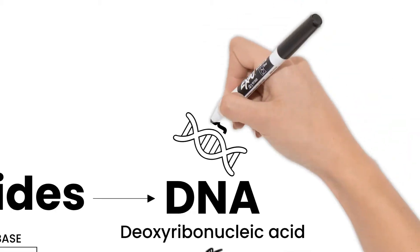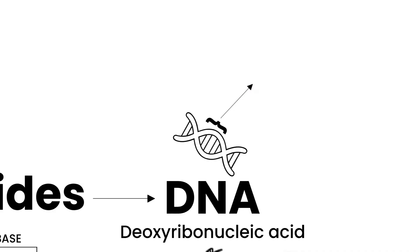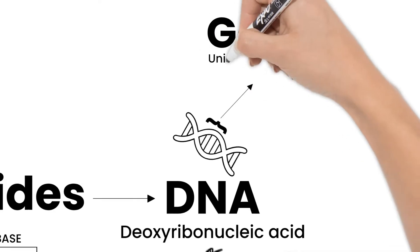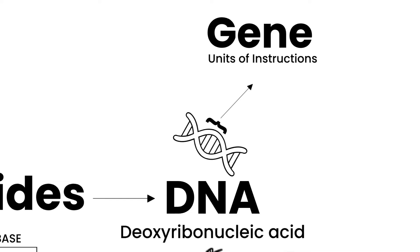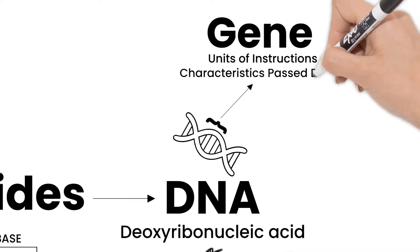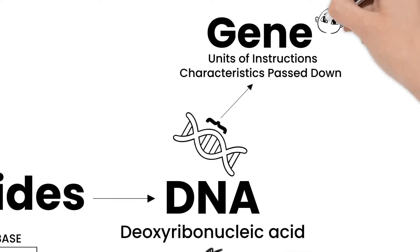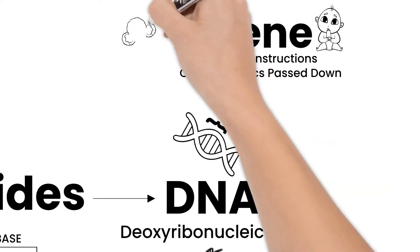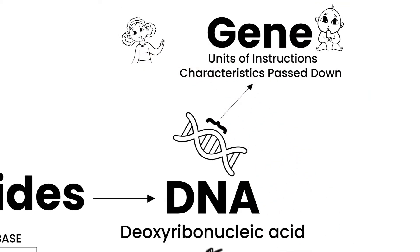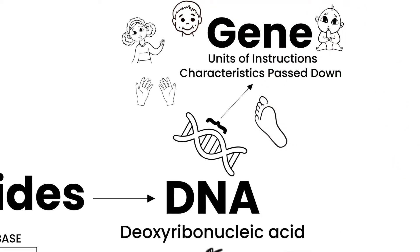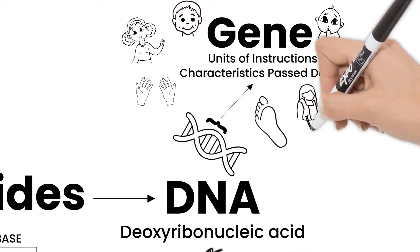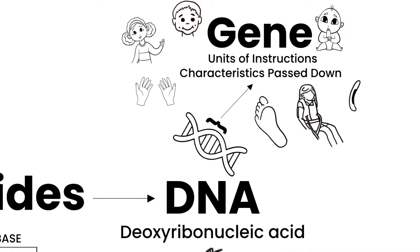We call segments of DNA genes. Genes are units of instructions that create different characteristics we pass down to our children, such as curly hair, left or right-handedness, dimples, length of fingers and toes, as well as disorders like cystic fibrosis and sickle cell anemia.